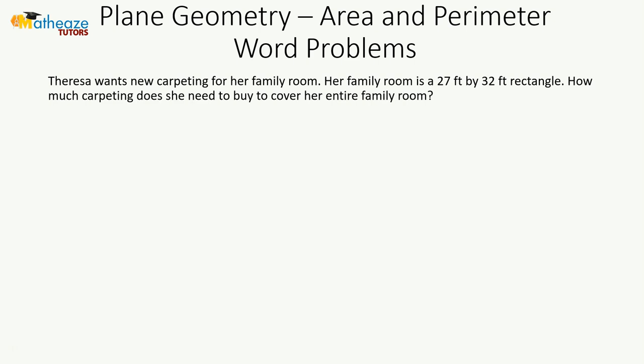One of the best practices as you deal with word problems that involve area and perimeter is to draw what you think the question is asking for, so it's easy to see the best approach to take. So we have a rectangle—this represents the room—it's 27 feet by 32.